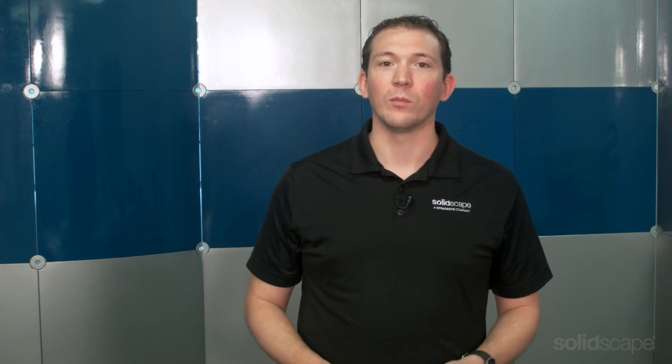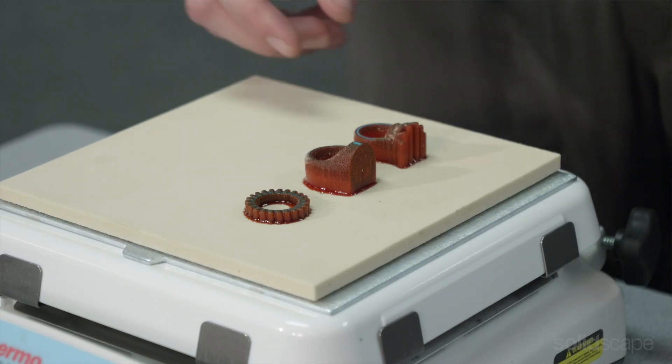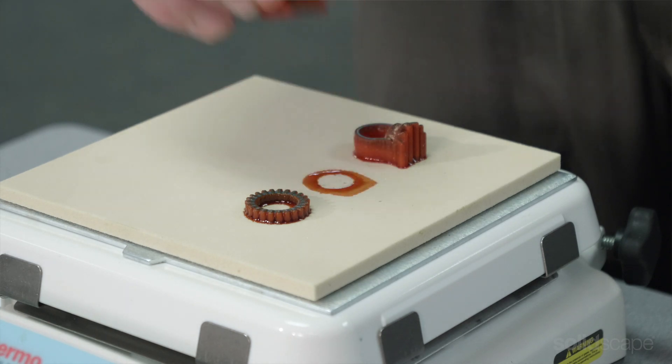Removing your waxes from the build plate should be approached differently depending on the wax. More robust waxes with thicker shanks or minimal prongs can be lifted off with your fingers.